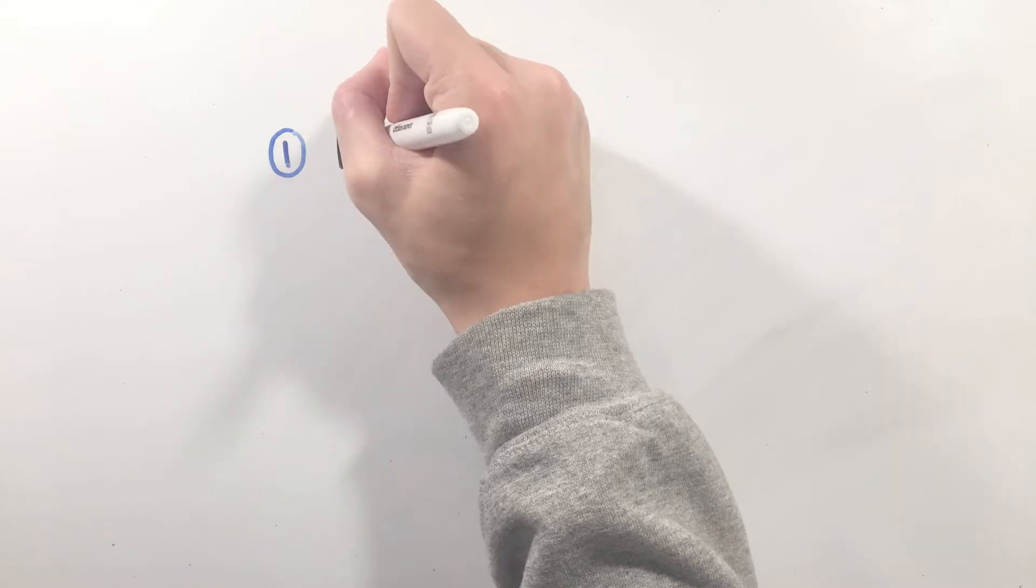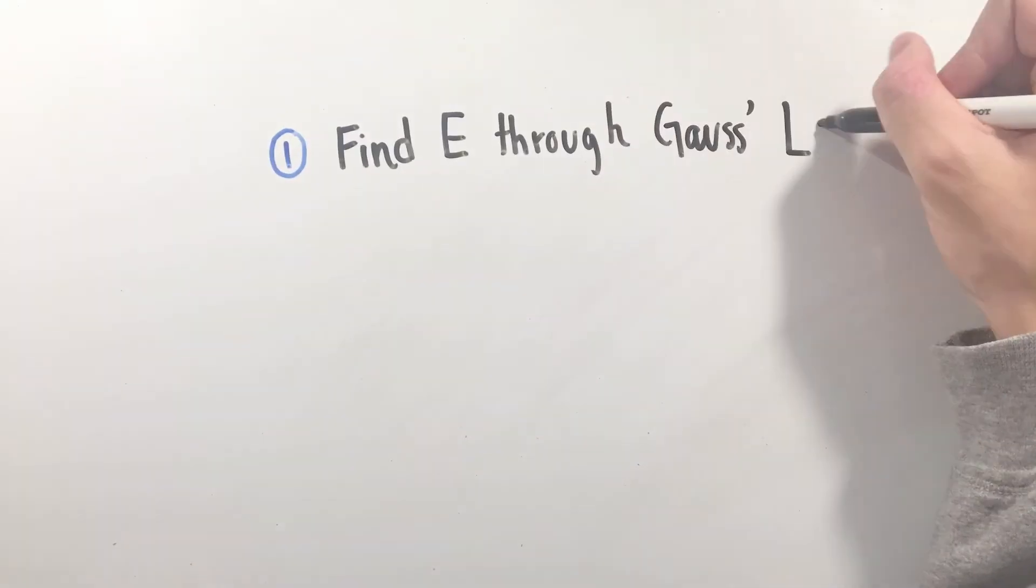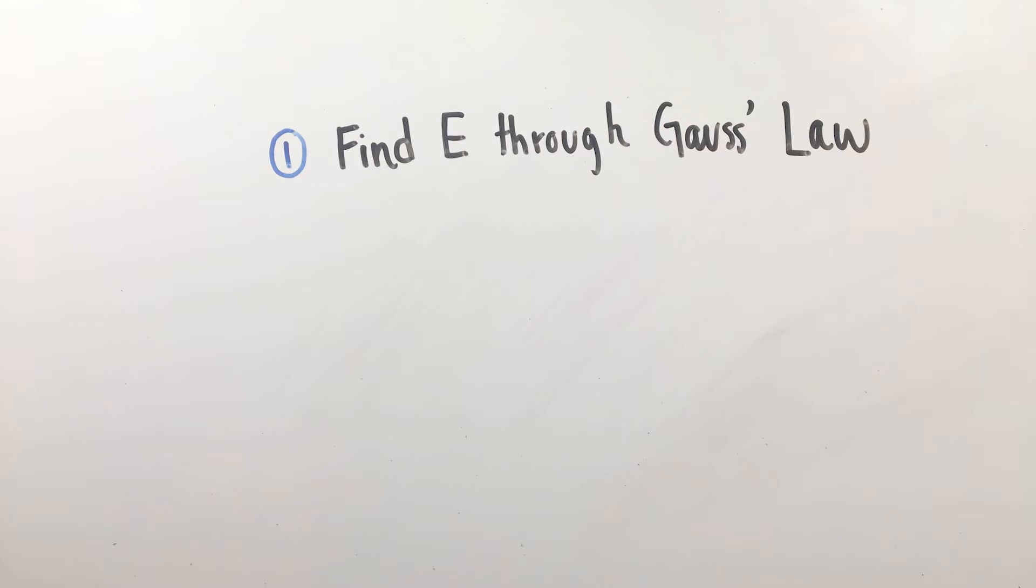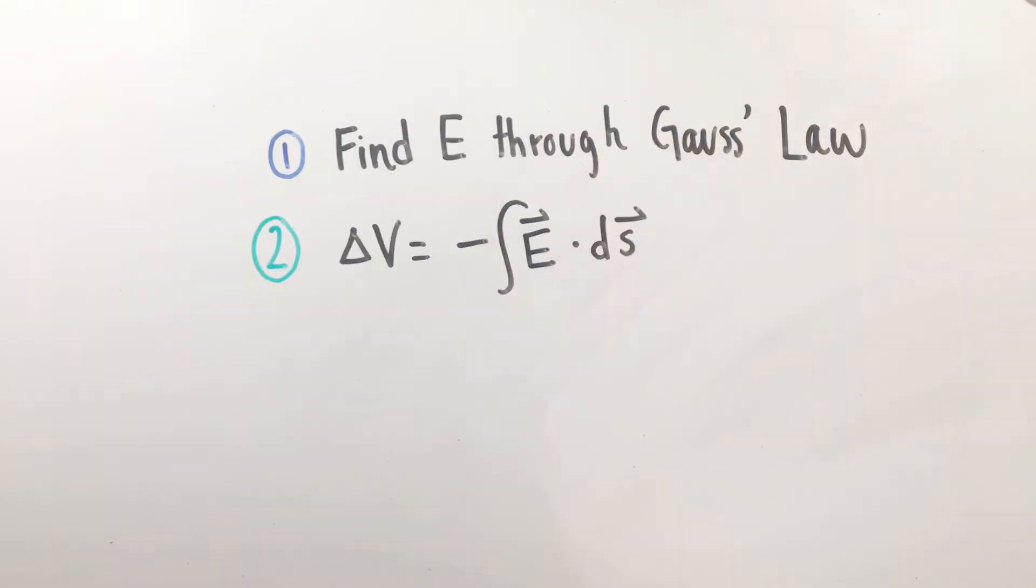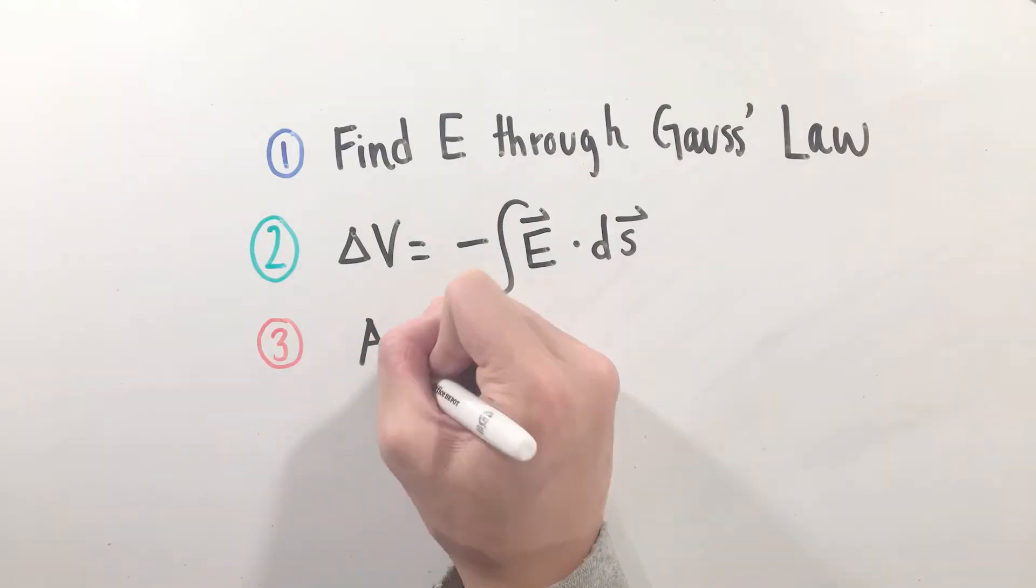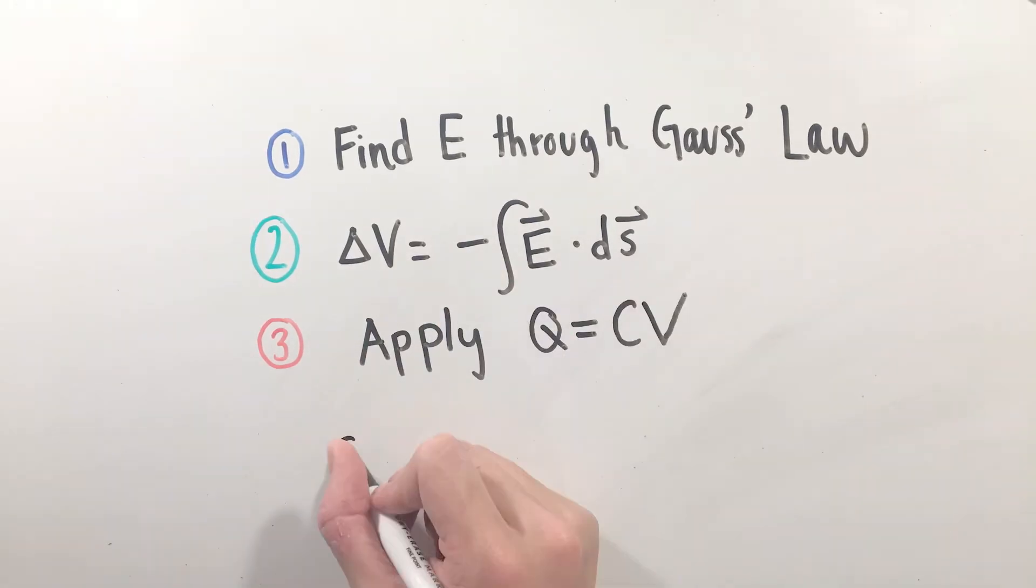Essentially, the process for solving for capacitance C can be broken down into three simple steps. First, calculate the electric field between the plates using Gauss's law, assuming some charges positive and negative Q on the two plates. Next, find the corresponding potential difference by integrating the electric field over the plate distance. Finally, using the relationship Q equals CV, solve for C.